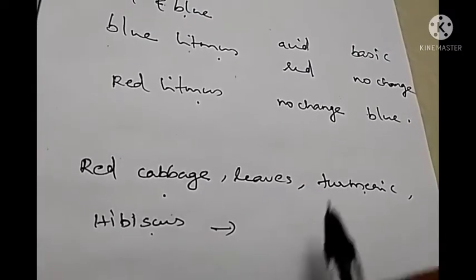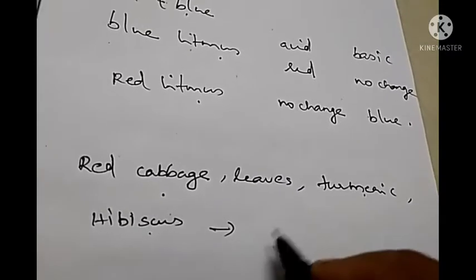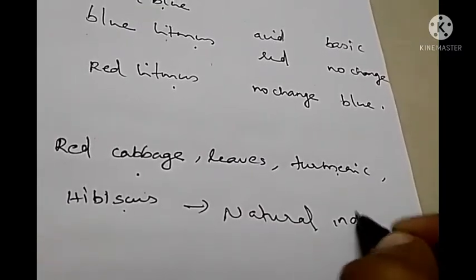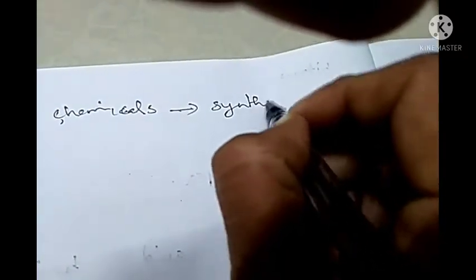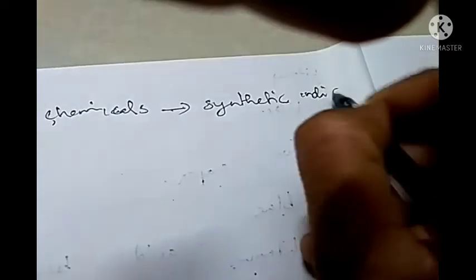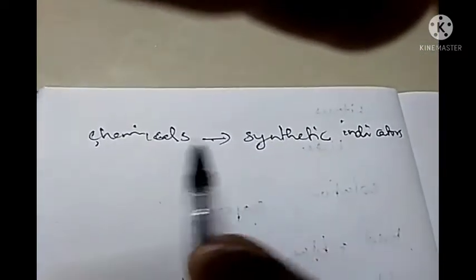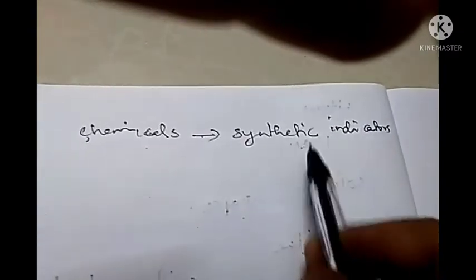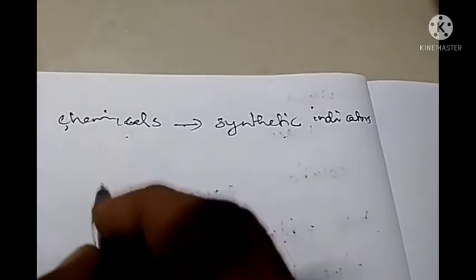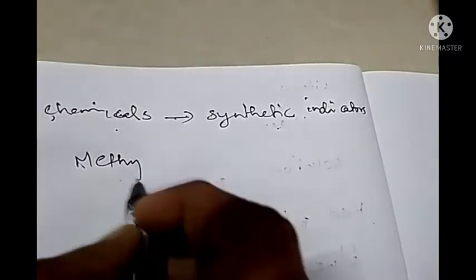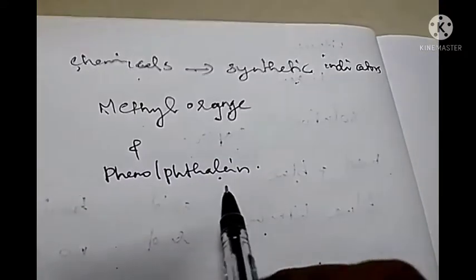Since all these substances are obtained from nature, these indicators can be called as natural indicators. Then, there are some indicators which we can prepare from chemicals — these are known as synthetic indicators. Examples for synthetic indicators are methyl orange and phenolphthalein.